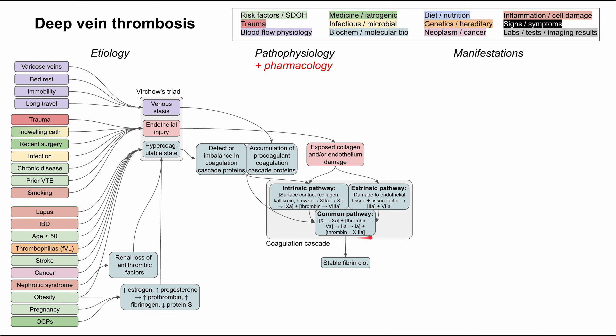The end of the common pathway is a stable fibrin clot, which leads to the generation of a thrombus. The most common place to have a DVT is in the lower extremity proximal deep veins. Lower extremity means your legs; proximal means typically at the knee or above, not really below the knee; and deep veins are veins not close to the skin but deeper toward the center of your leg. That's where DVTs tend to form.